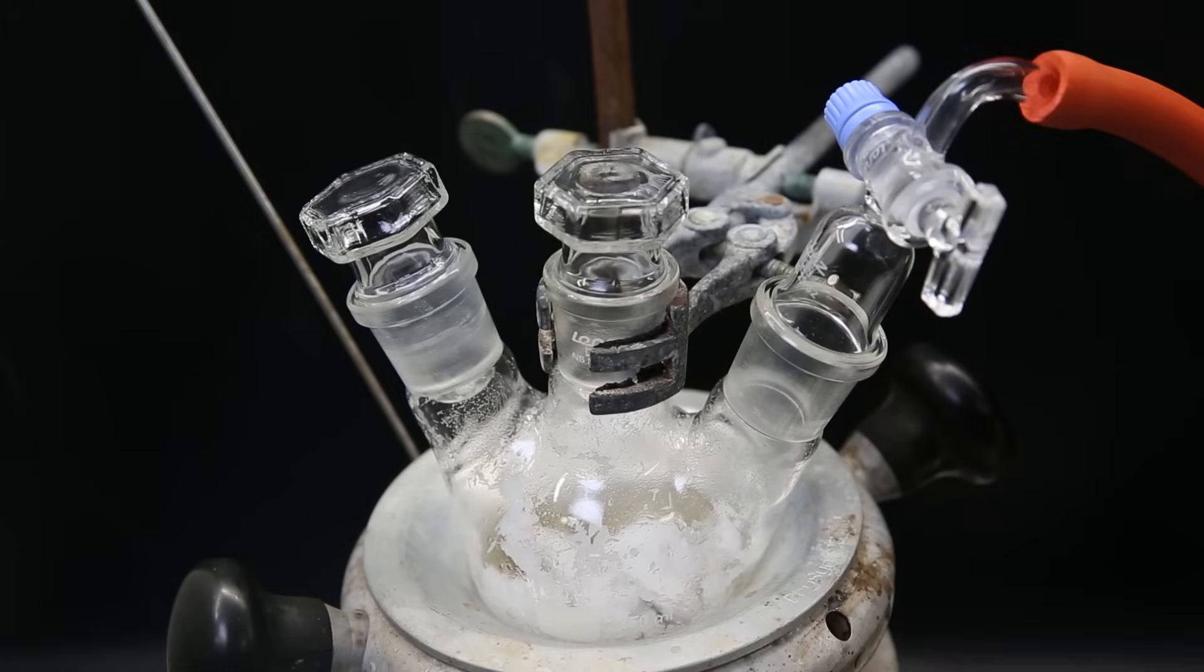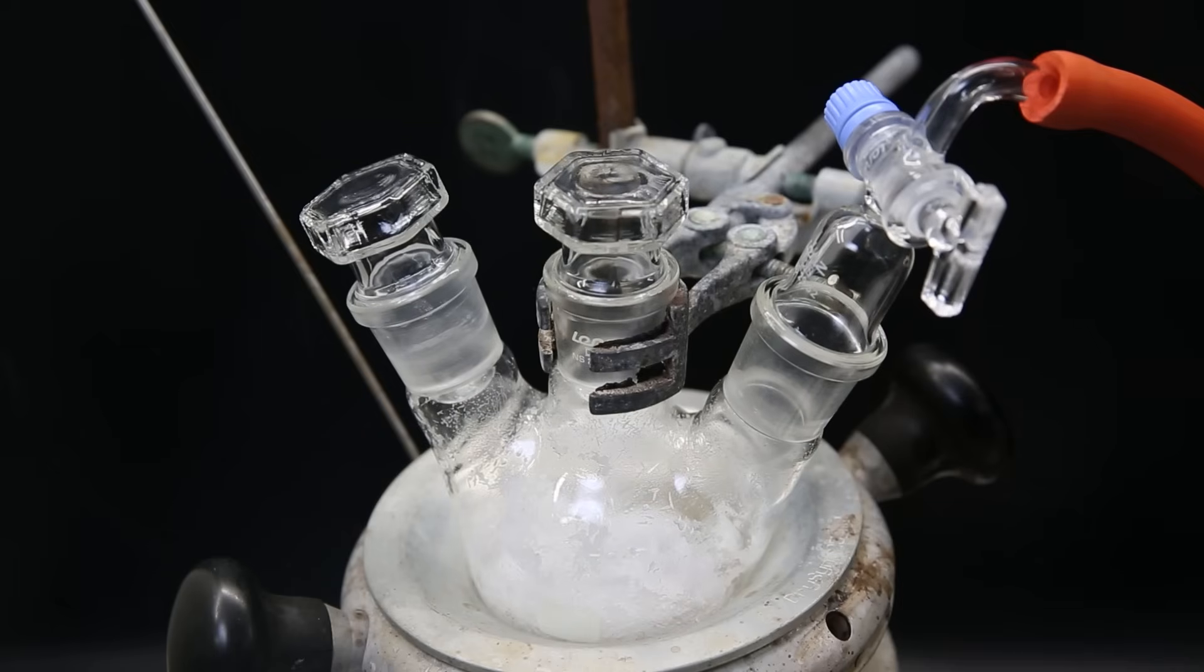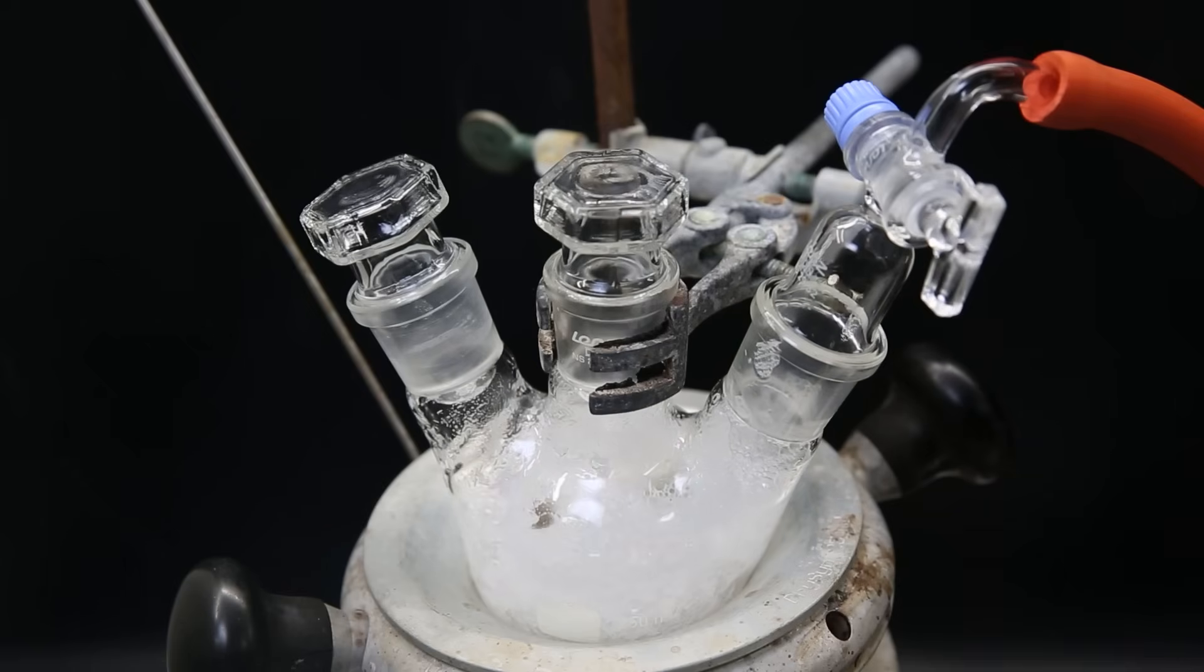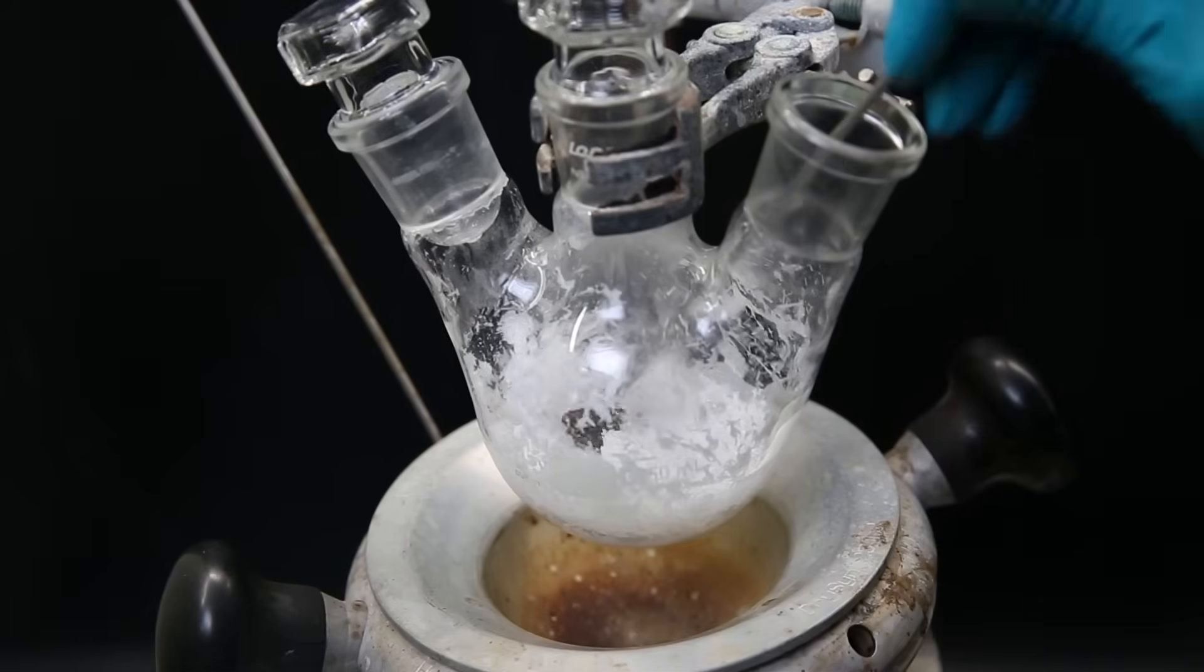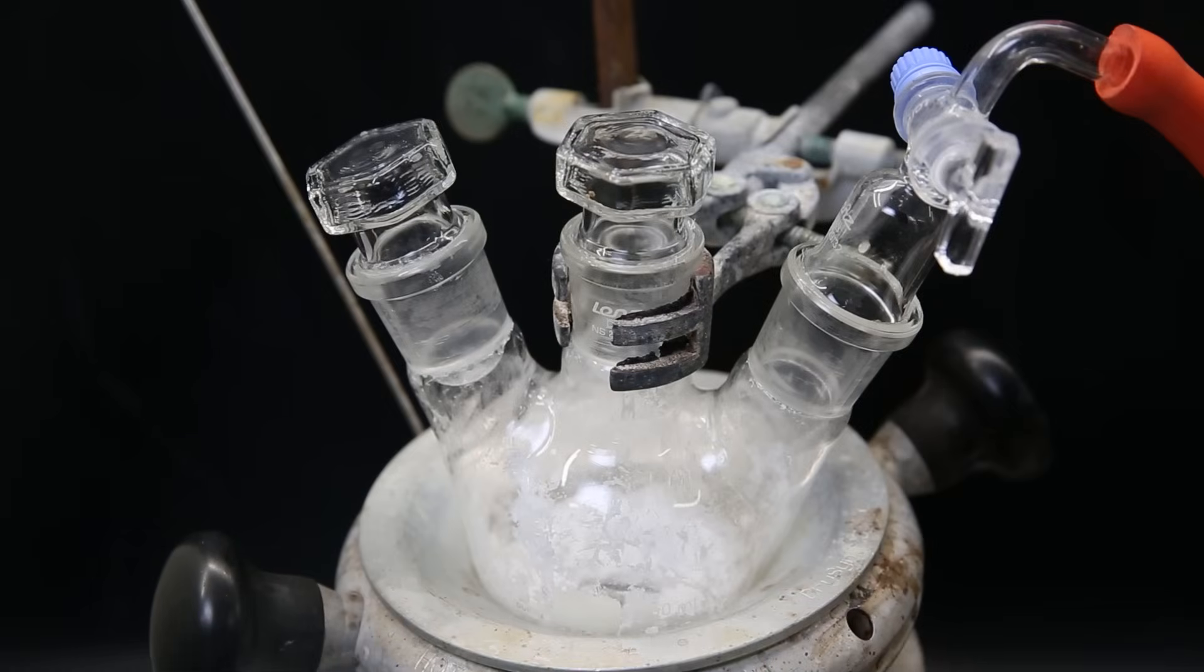Now I set the flask back in the heating mantle and attach the gas adapter connected to a vacuum pump. I heat the flask lightly and start pulling a vacuum to remove all of the remaining 1,2-dimethoxyethane. I leave it for a few hours, and afterward loosen the crystals with a spatula, and leave it to dry more overnight.